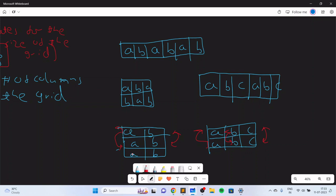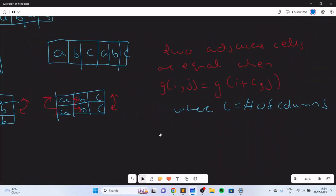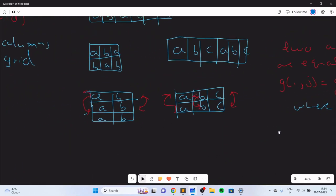What I'm trying to get at is that two adjacent cells are equal when you have g[i][j] equal to g[i+c][j], basically the next row. This is when two adjacent cells are equal, where c is the number of columns. We know that c is a divisor of n, and this helps us.